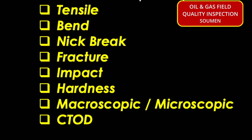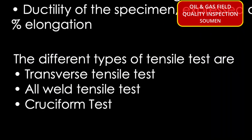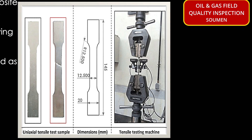We will go through all the tests one by one. Let us start with the tensile test. In the tensile test, stress is applied in opposite directions to pull the two ends apart. All test pieces will tear off after a certain load — we need to measure at which load the test piece is broken. It is used to assess the yield point, ultimate tensile strength, and ductility (percentage elongation) of the specimen. The different types of tensile tests are: transverse tensile test, all-weld-metal tensile test, and cruciform test.